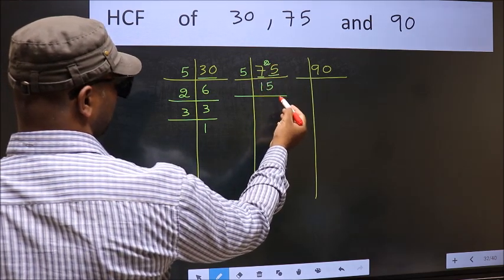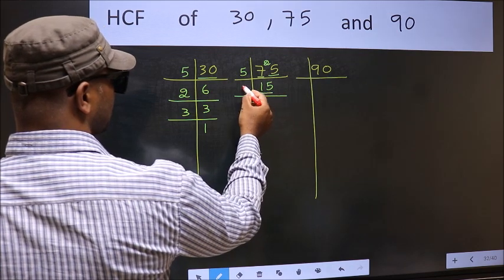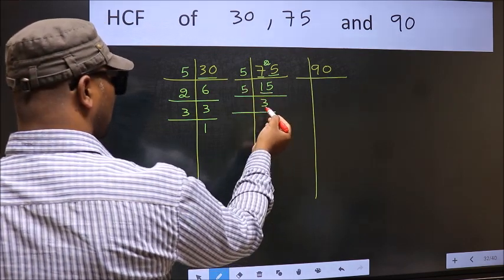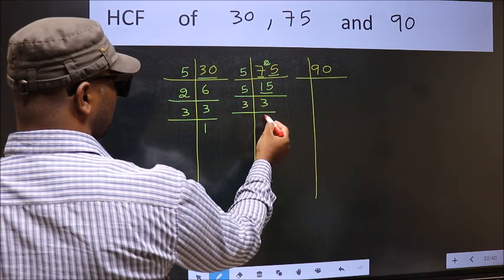When do we get 25 in 5 table? 5 fives is 25. Now 15 is 5 times 3 is 15. Now 3 is a prime number so 3 times 3.